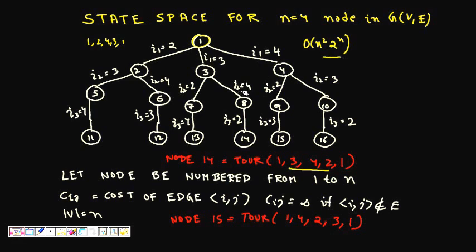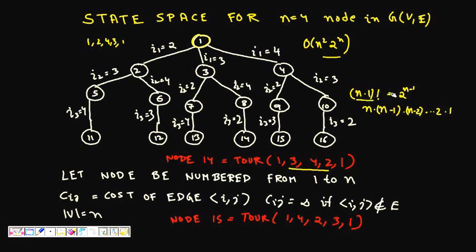To understand why (n−1)! > 2^(n−1): n! = n × (n−1) × (n−2) × ... × 2 × 1, and each factor after 2 is greater than 2, so (n−1)! is clearly greater than 2^(n−1). Once we have a sequence, we check it against the adjacency matrix.